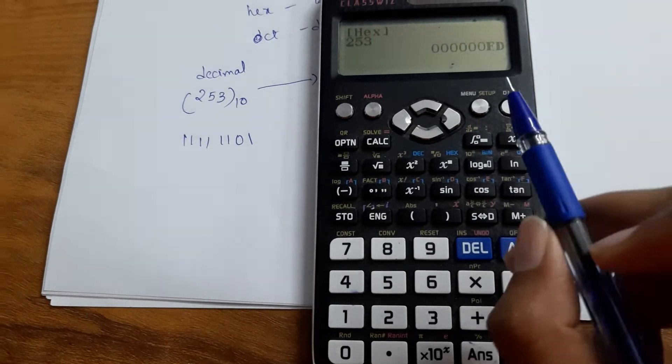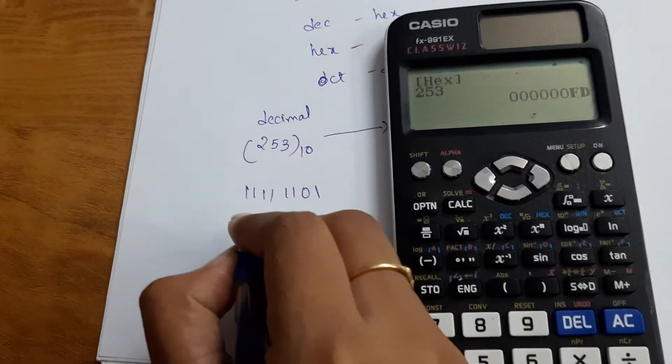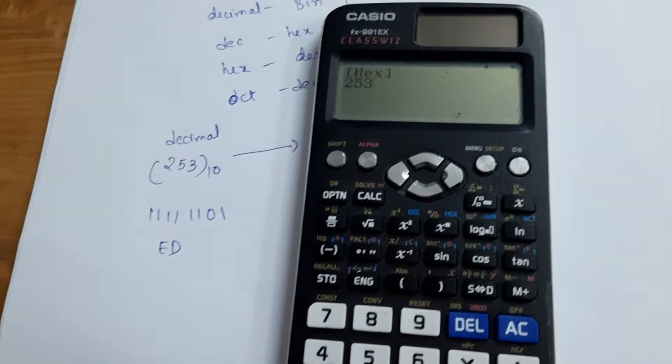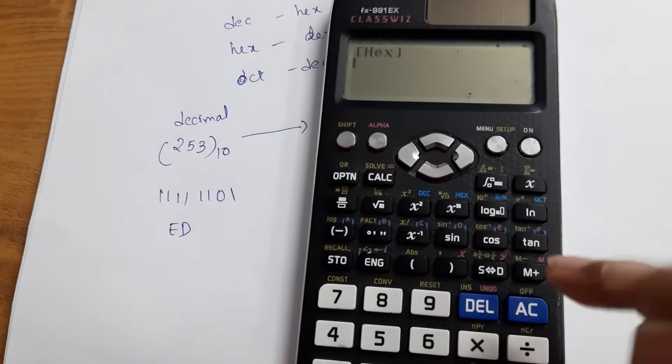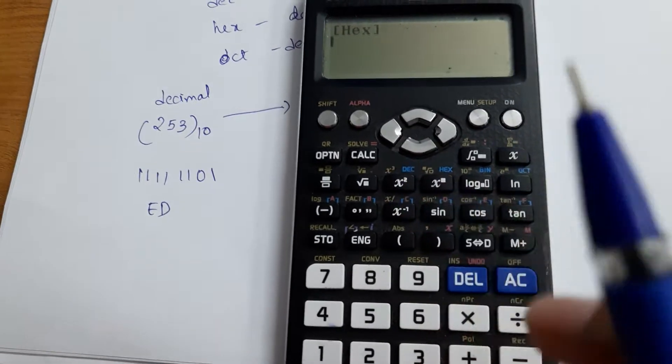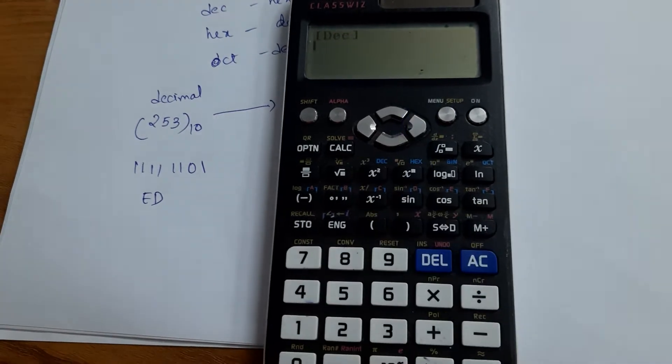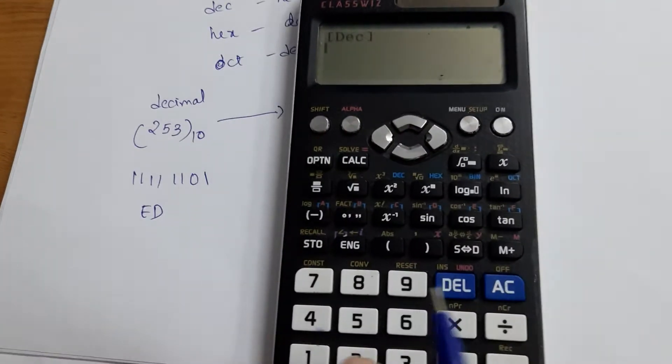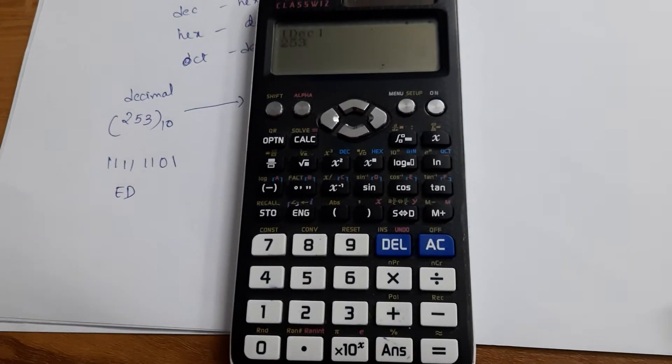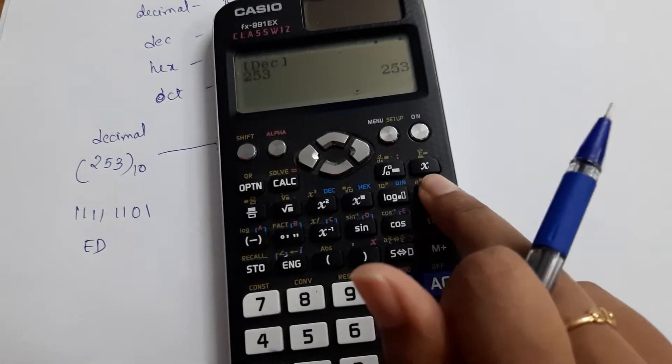You can see ED, write it down. Next, what we want? Again click on decimal because we are converting all the decimal number to different forms. So decimal, now you write 253, equals to. So what do you want? Octal. See, 375.